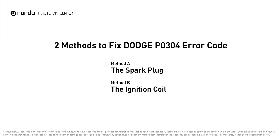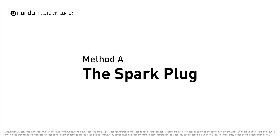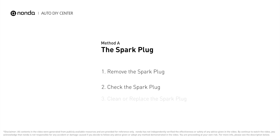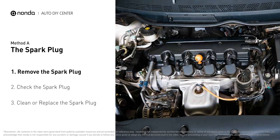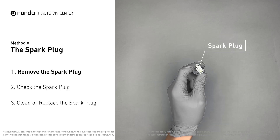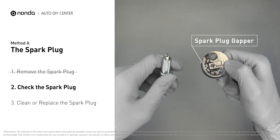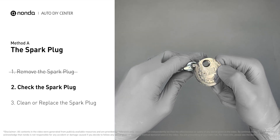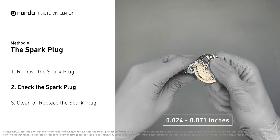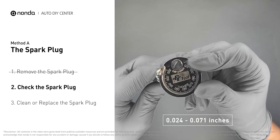Here are two of the most practical solutions to fix Dodge's P0304 error code. Method A: the spark plug. The spark plugs are located at the engine end of the wires, under the plug covers that attach them. First, carefully remove the spark plug, then use a spark plug gapper to check the spacing. Normally the spacing should be between 0.024 to 0.071 inches.